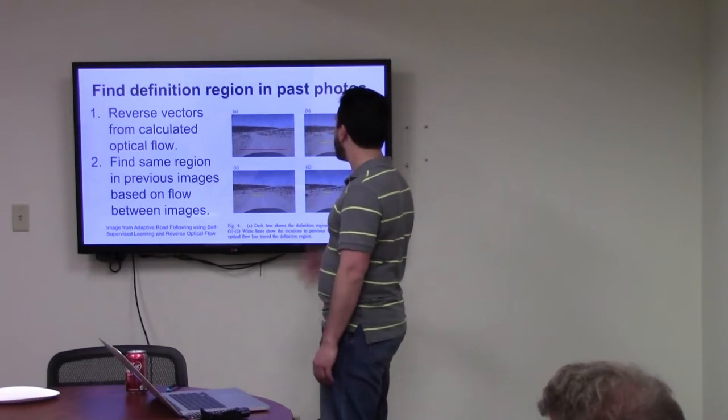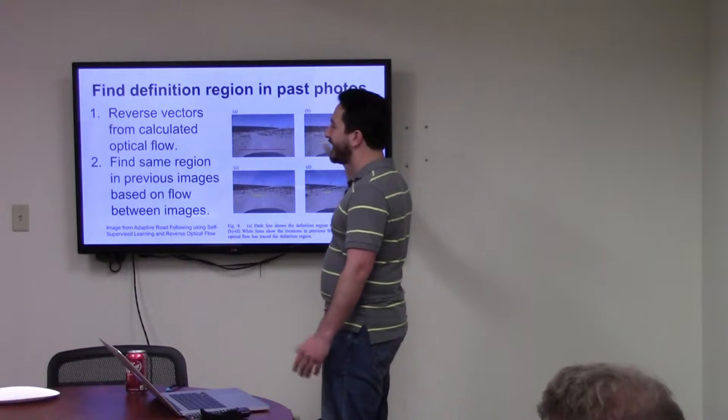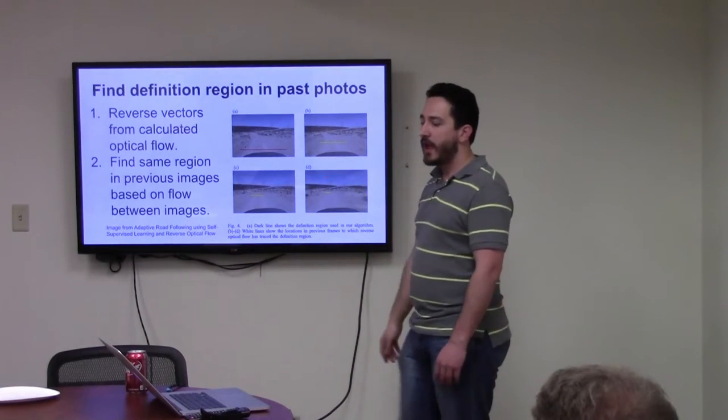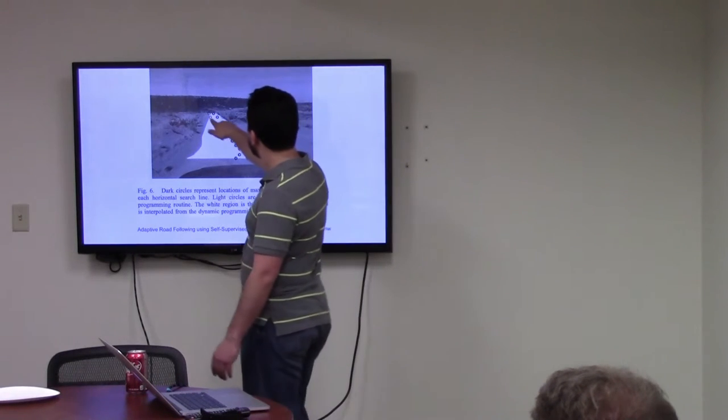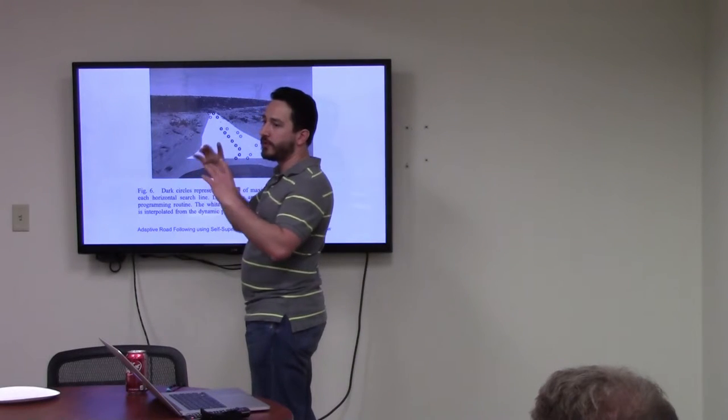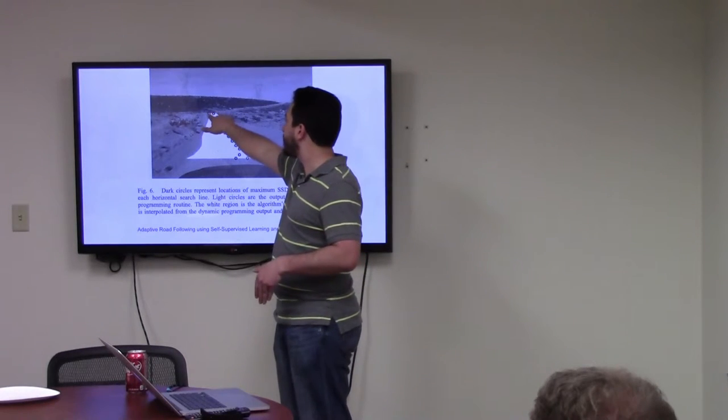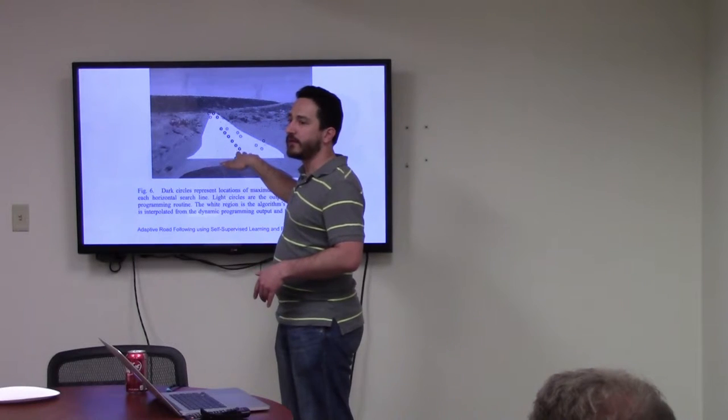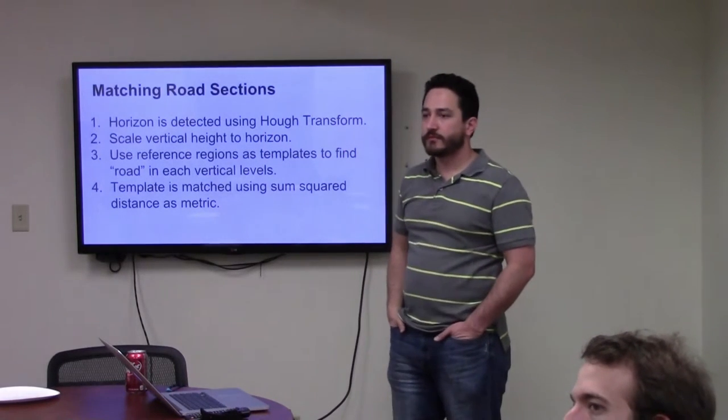And then they take these reference regions that existed in previous images, because this is the exact same spot on the Earth in all these different pictures. So they're saying, if I have some number of pictures that show this region of the Earth, then I can find something that looks like this region of the Earth in future pictures. So once they have that, then they go through, and they look at the next set of pictures, and they're looking for things that look like these sections in that next picture.